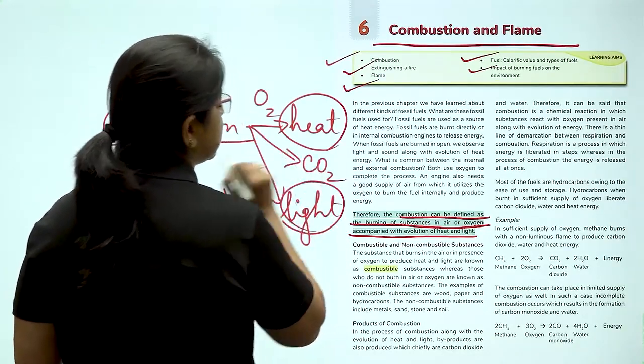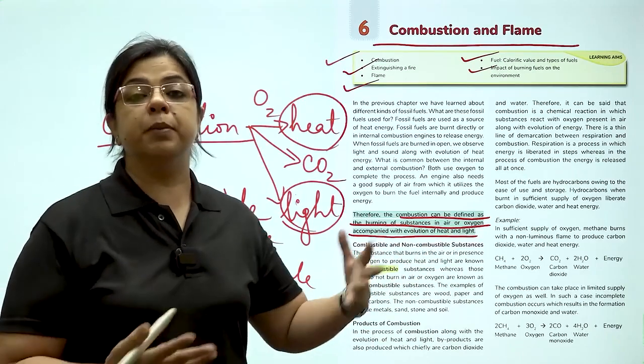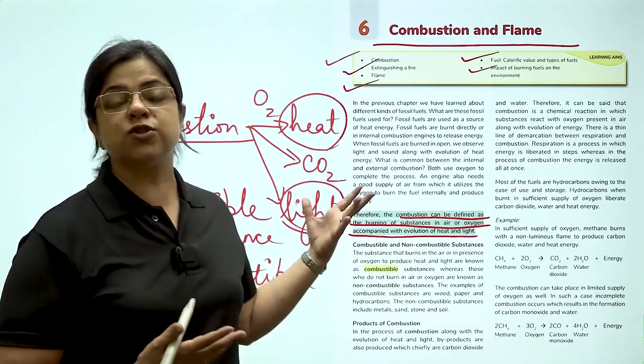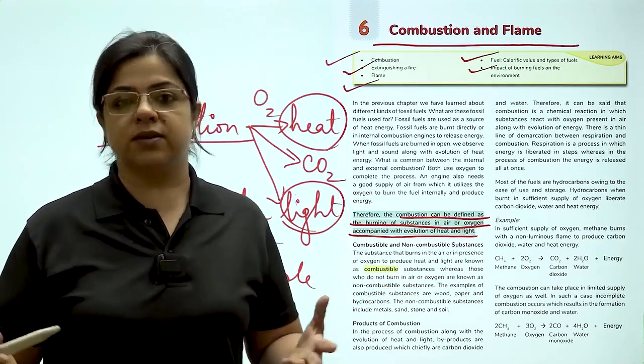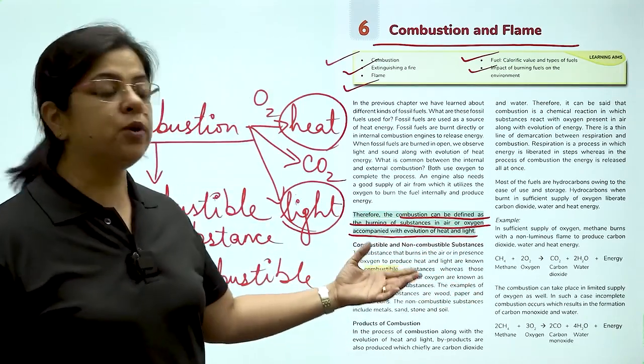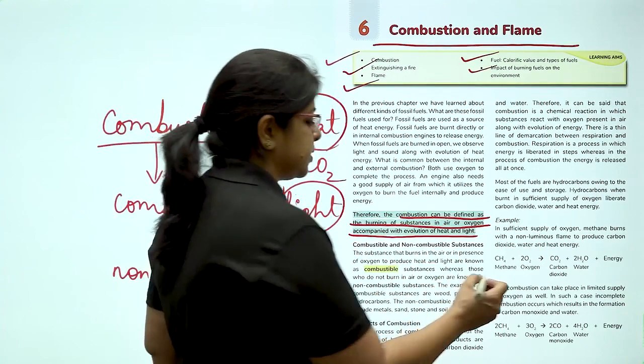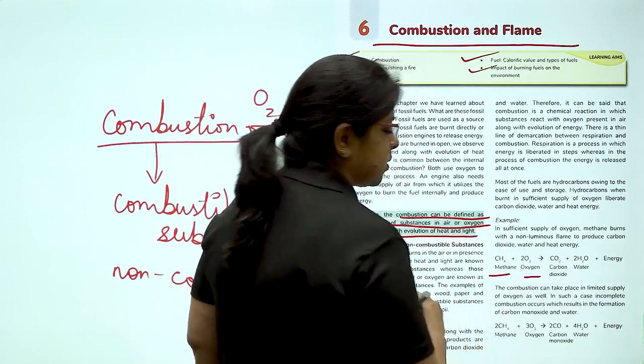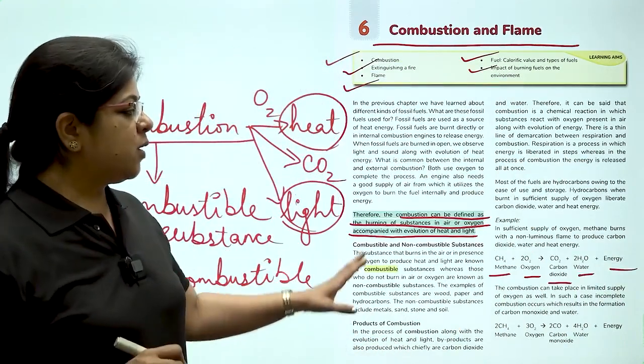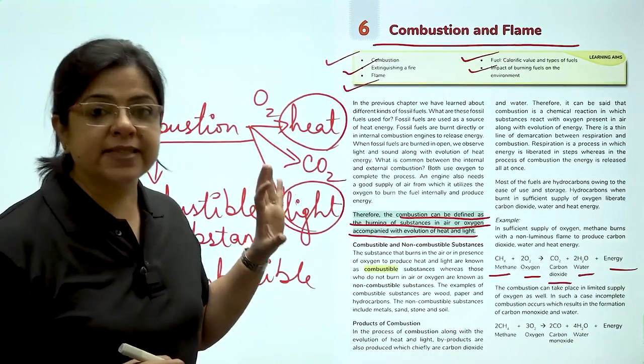Combustion gives out carbon dioxide. How else do you think we are talking so much about not burning things, not burning waste because it leads to the production of a lot of carbon dioxide which is added to the air. So here is an example of an equation which tells us how combustion takes place. When methane reacts with oxygen, it produces carbon dioxide, water and energy. Now this is when the supply of oxygen is sufficient.